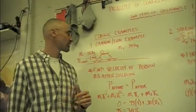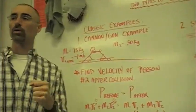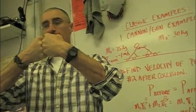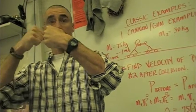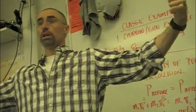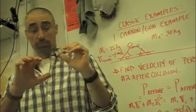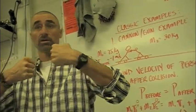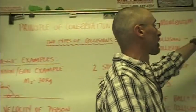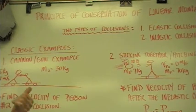This example is kind of a classic — I call it the cannon or the gun example. This is where we have two things that are stationary, like a bullet and a gun or a cannon and a cannonball, and they push off of each other due to gunpowder or whatever. We're going to use the idea that the momentum before the collision equals the momentum after, which is the principle of conservation of momentum, to solve some problems.